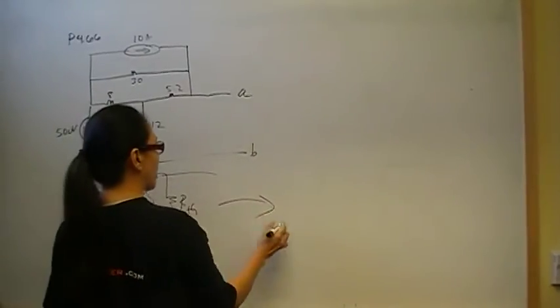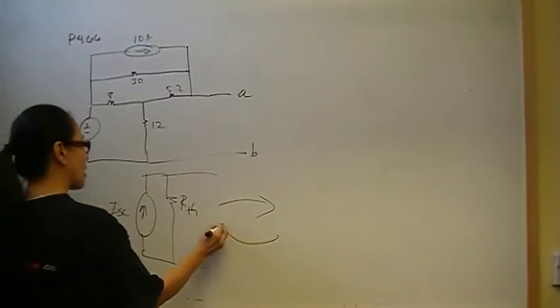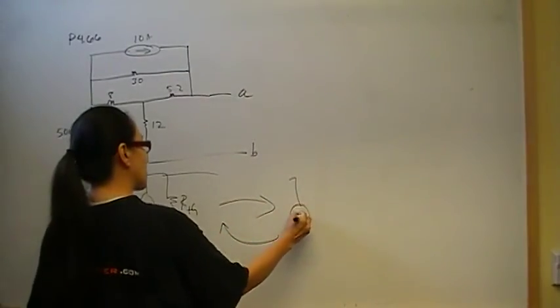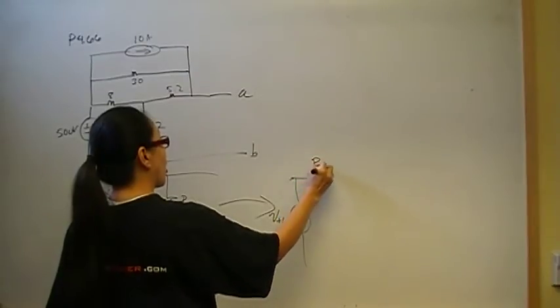That's the Norton equivalent, and the Thevenin equivalent is going to be the source transformation of that, and they go back and forth. So it's going to be some V-Thevenin, some voltage source, in series with R-Thevenin.